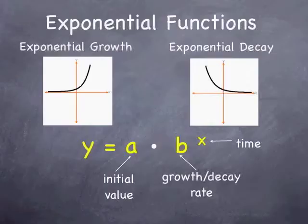For exponential decay, it is the exact opposite. It starts off decreasing at a very rapid pace, and then sort of evens off more toward the right-hand side of the graph. For exponential functions, we have the general formula y equals a times b to the x power. The a is our initial value or our starting value. The b is our growth or decay rate, and our exponent x normally stands for time but can stand for a variety of units.